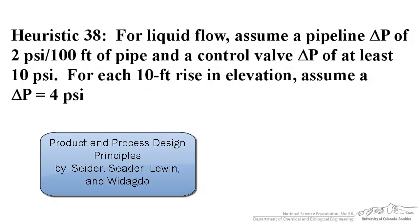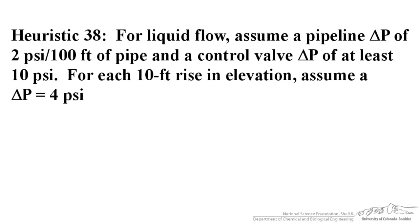In the Product and Process Design Principles book, we're specifically going to look at Heuristic 38, which states that for liquid flow, we assume a pipeline change in pressure of 2 psi per 100 feet of pipe and a change in pressure of at least 10 psi for each control valve. Also, for each 10-foot rise in elevation, we assume a change in pressure of 4 psi.